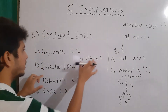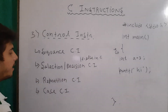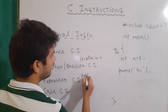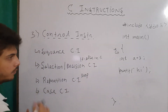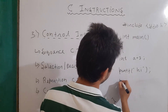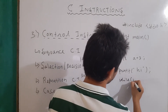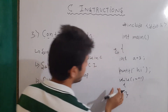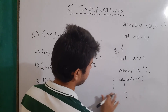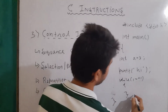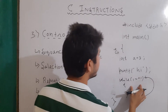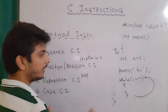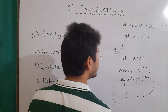Then we have repetition control instructions, also called loop control instructions, which we will study in the loops section. Basically, what happens is we write a loop and its body. The control would normally go downward, but if the condition is true, the control goes back to where the loop started. The loop keeps repeating itself until the condition becomes false. We will discuss loops in the loop sections.